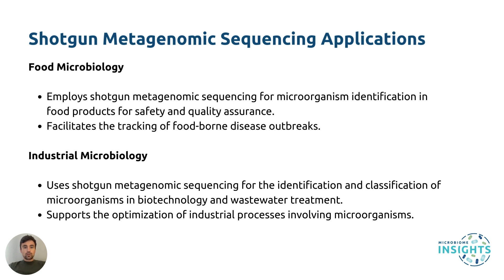Shotgun sequencing is also used in food microbiology. It is used to identify microorganisms in food products, ensuring safety and quality control. For example, it plays a key role in tracking foodborne disease outbreaks such as those from E. coli or salmonella contamination in food processing plants. Finally, shotgun metagenomic sequencing is also applied in industrial microbiology, where it helps optimize processes involving microorganisms such as biotechnology and wastewater treatment, monitoring microbial communities to ensure efficient processing and reduce harmful byproducts.